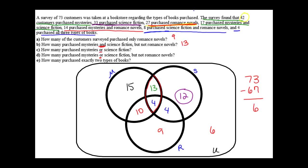How many purchased mysteries or science fiction? 'Or' is the same thing as the union of those two sets, while 'and' corresponds with the intersection and 'or' corresponds with the union. So how many purchased mysteries or science fiction is the union of these two sets — all people contained in those sets. The sum of 15 plus 13 plus 12 plus 10 plus 4 plus 4 gives you 58.